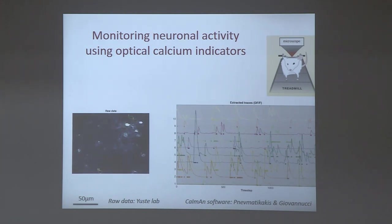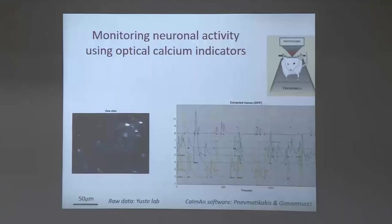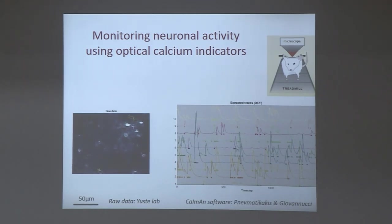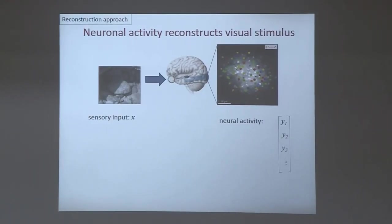For the purposes of this talk, I will characterize neuronal activity just with the firing rate — the number of spikes per second. One of the central questions in neuroscience right now is: what is the right way to think about this neuronal population activity? What does it really represent? One answer has been around for many years — what I call the reconstruction approach — the hypothesis that the activity of neurons collectively reconstructs the stimulus being shown to the brain.